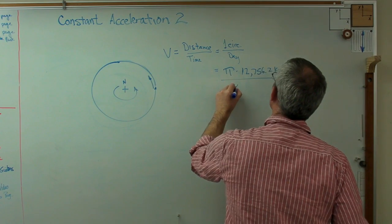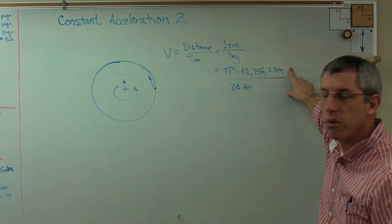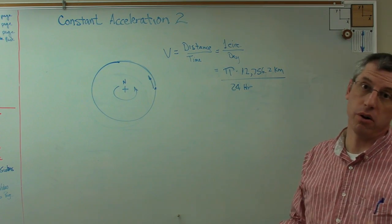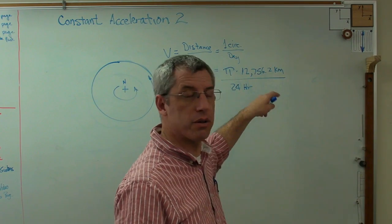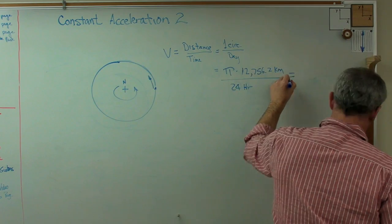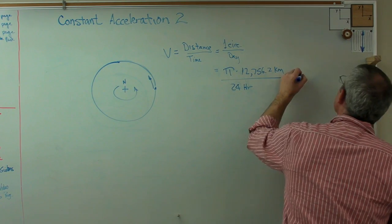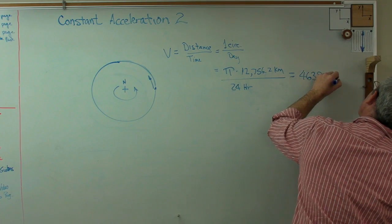One day there's 24 hours. I don't want kilometers per hour, I want meters per second. There's a thousand meters in a kilometer, and 3,600 seconds in an hour, and that works out to 463.9 meters per second.